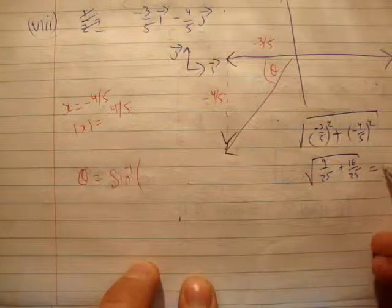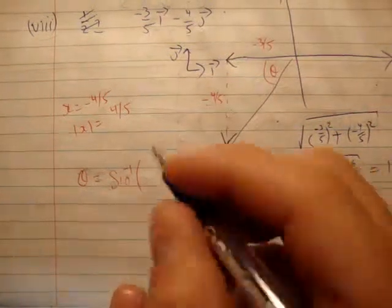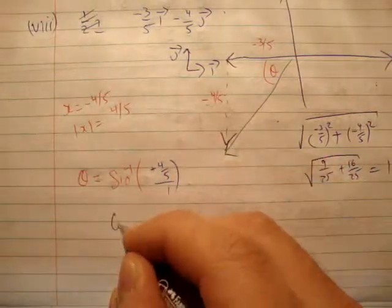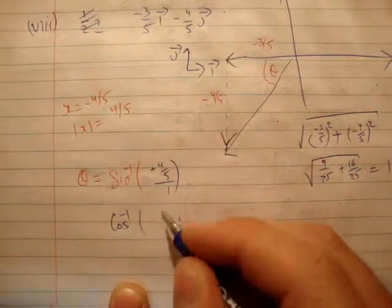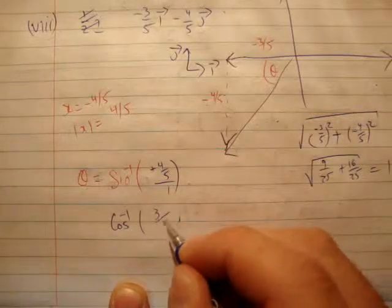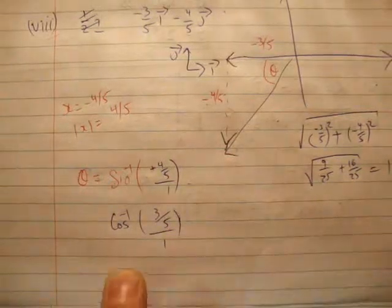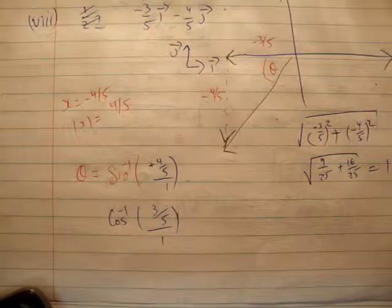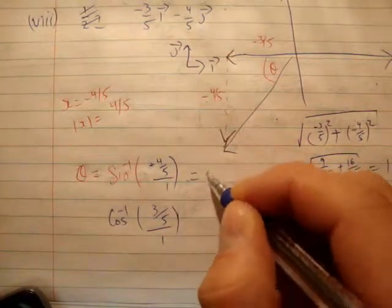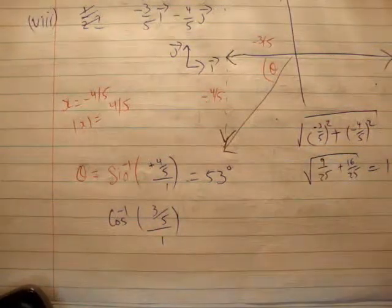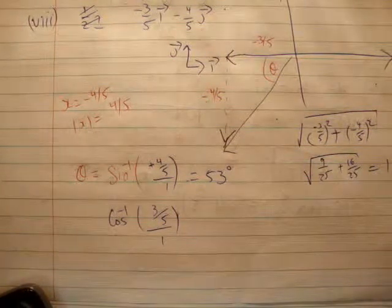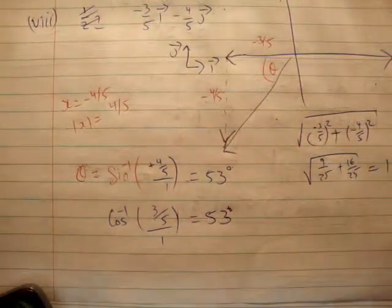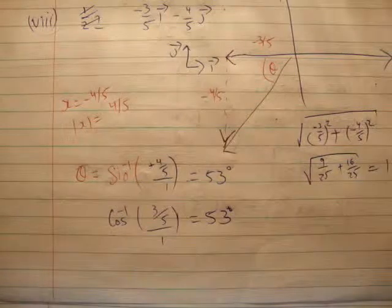The magnitude is equal to 1. It's inverse sine of 4 fifths over 1, and inverse cosine of 3 fifths over 1. Inverse sine of 4 fifths gives 53 degrees. And inverse cosine also gives 53 degrees. You know you got the right answer because you've done it two ways and got the same one.